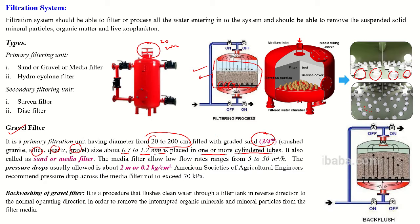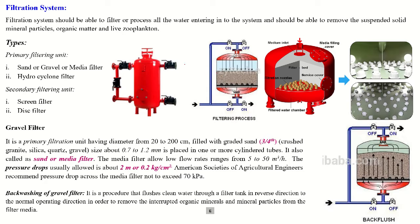The flow rate of the media filter is low, ranging from 5 to 50 cubic meters per hour. The allowable pressure drop in the sand filter is 2 meters. As per the American Society of Agriculture Engineering, the pressure drop in the sand filter should not exceed 7 meters or 70 kilopascals.